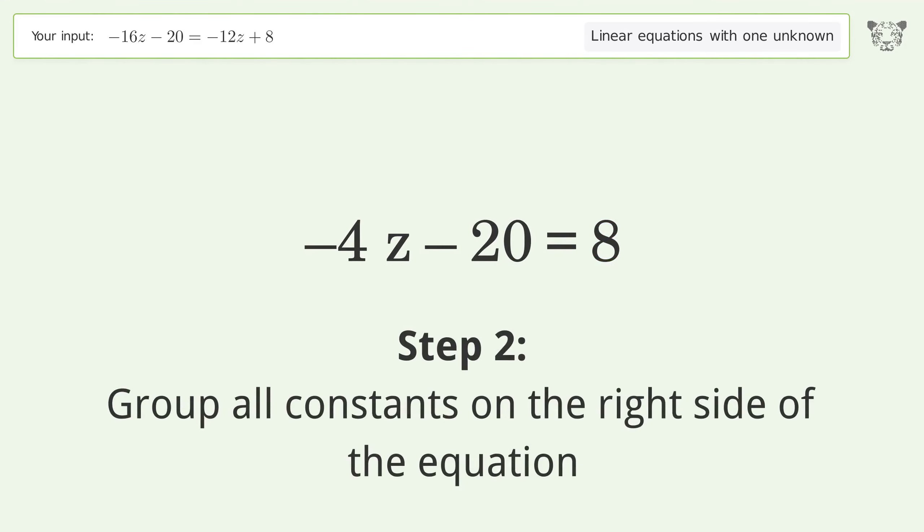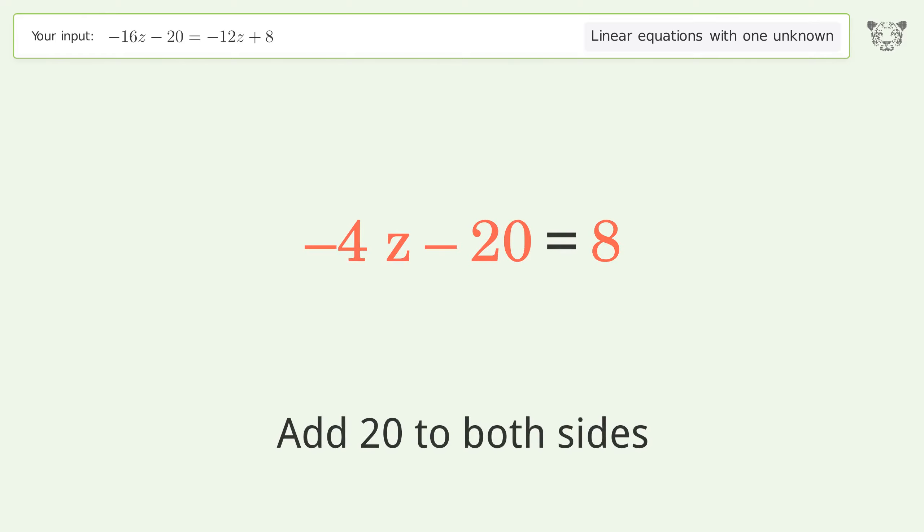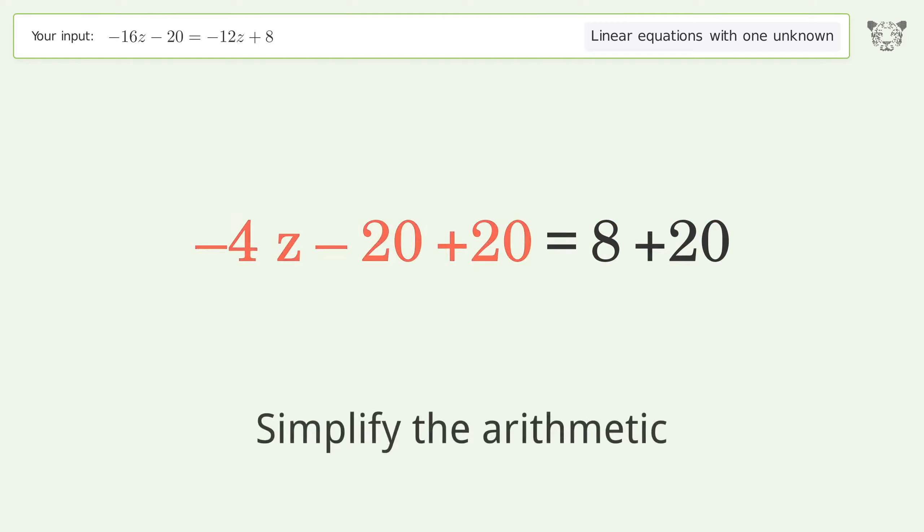Group all constants on the right side of the equation. Add 20 to both sides. Simplify the arithmetic.